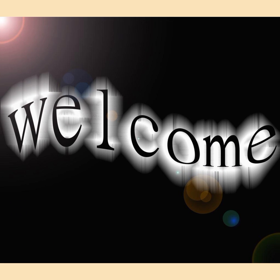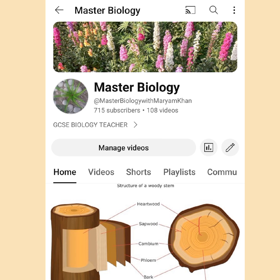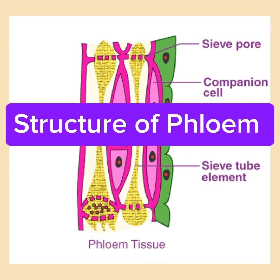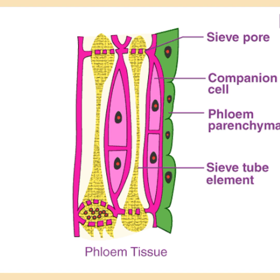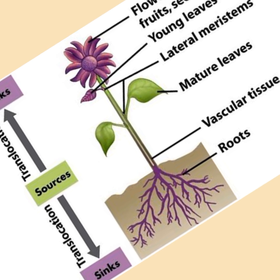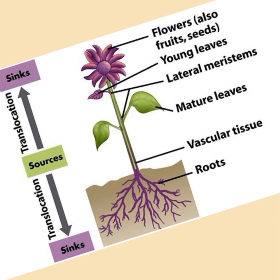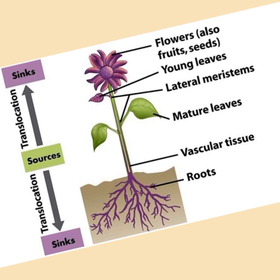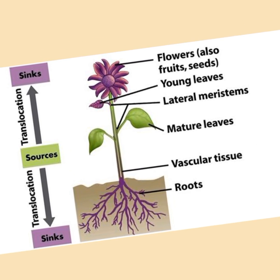Hello friends, welcome to my YouTube channel Master Biology with Mariam Khan. In this video we will study the structure of phloem. Phloem is a vascular tissue which is responsible for translocation of sucrose and amino acids from the source.